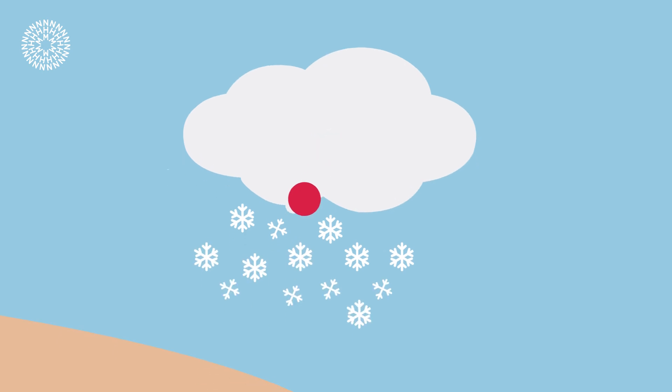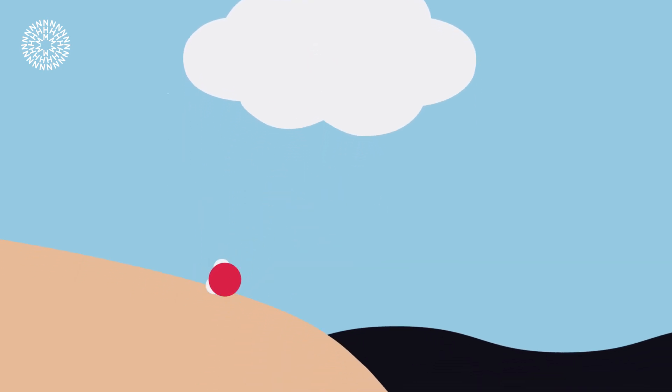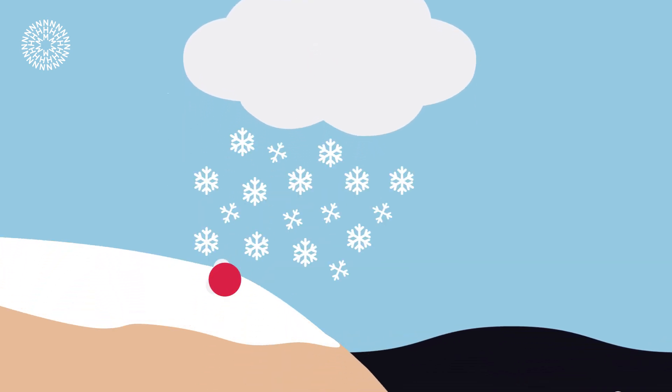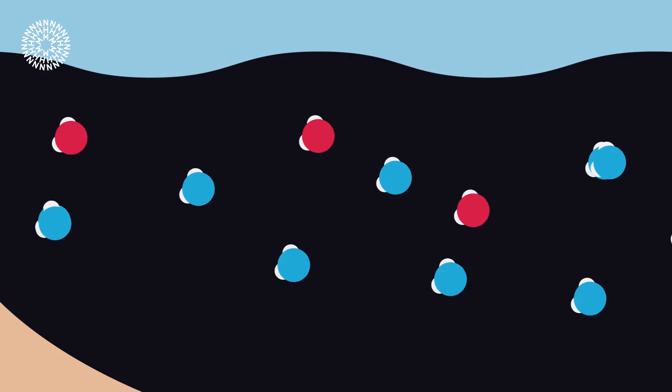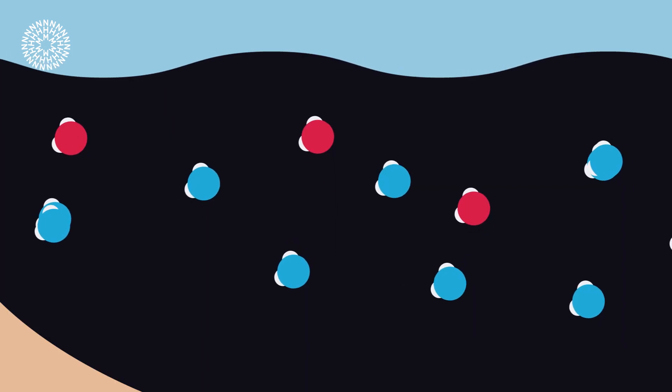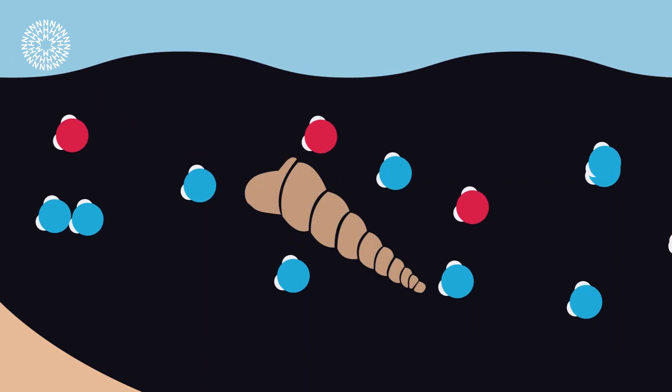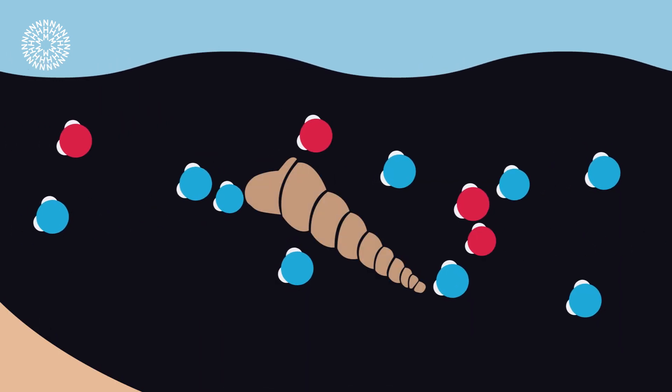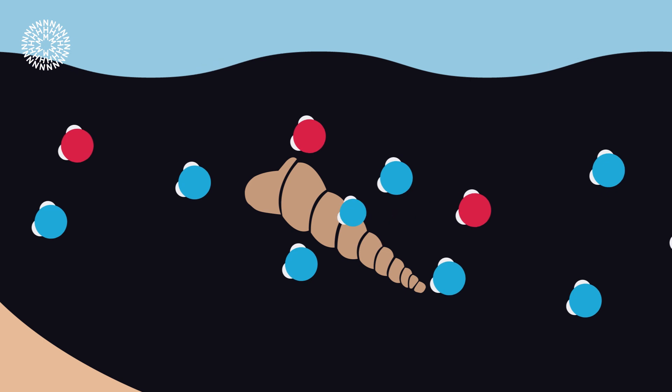During cold periods, though it's evaporating, it falls as snow and gets trapped on the land. This means there's less light oxygen in the ocean, and therefore less in the microorganism's shell.